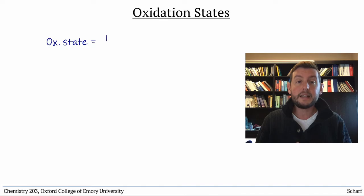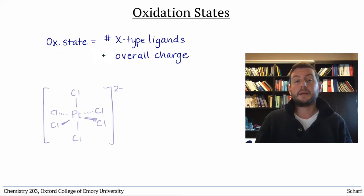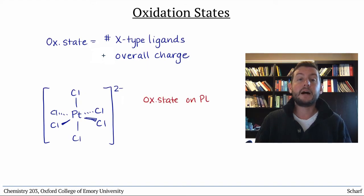The oxidation state of the metal is the number of X-type ligands plus the overall charge on the complex. So, for instance, the complex PtCl6 2- has a platinum ion with 6 chloride ions, which are X-type, and an overall negative 2 charge, so the platinum ion's oxidation state is plus 4.